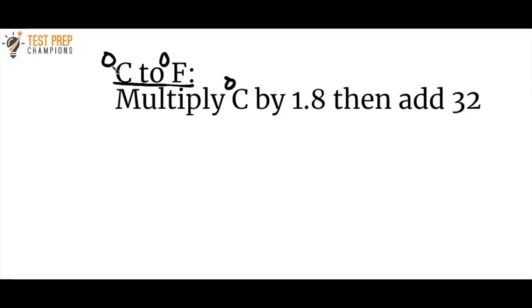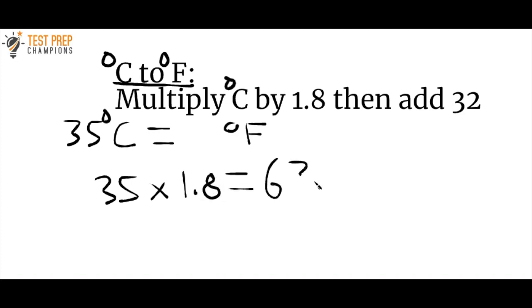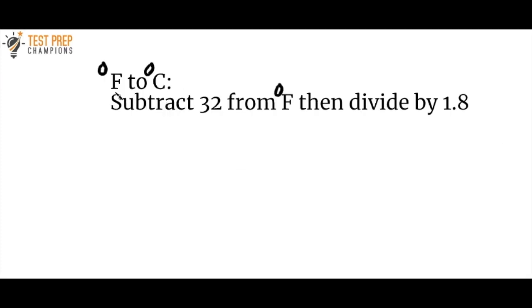Let's say that we have a temperature in degrees Celsius and we want to convert that to degrees Fahrenheit. All you do is multiply the degrees Celsius by 1.8, then add 32. Let's look at an example. So let's say we've got 35 degrees Celsius and we want to convert that into degrees Fahrenheit. So all we do is we start with the temperature in Celsius, which is 35, and we then multiply by 1.8, and that gives us 63, and then we just add 32. So 63 plus 32 equals 95, and the answer is 95 degrees Fahrenheit.